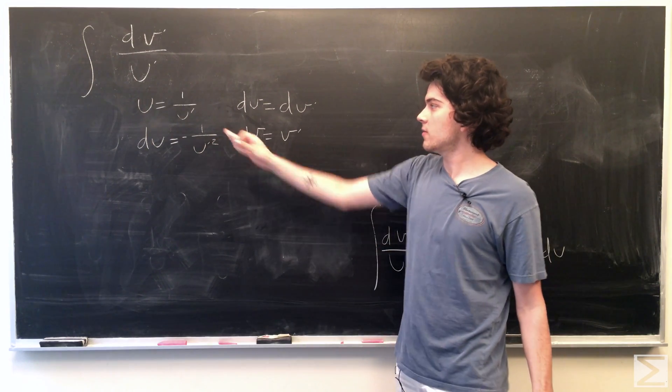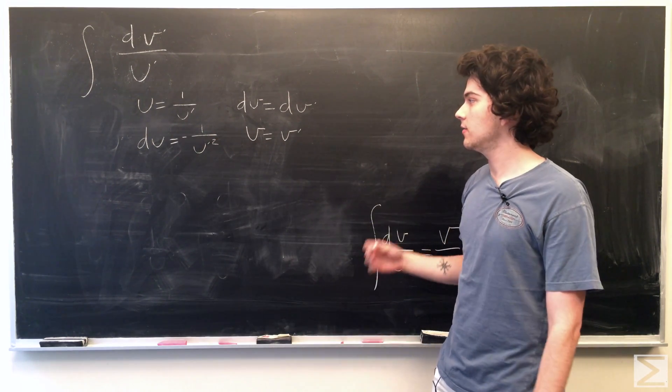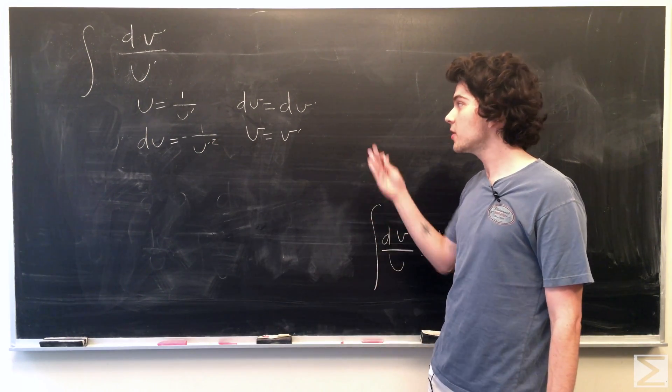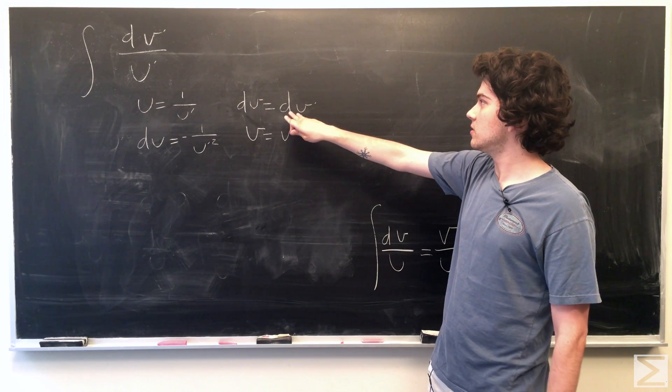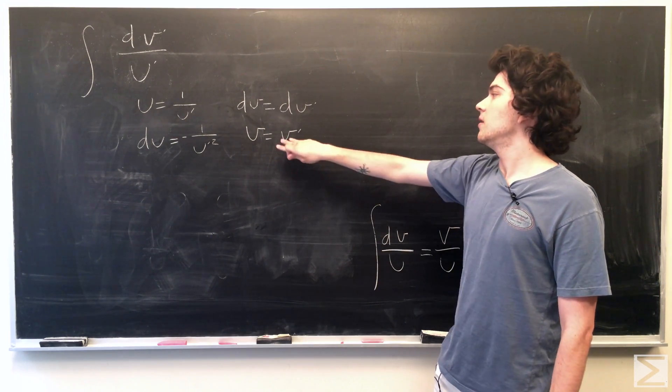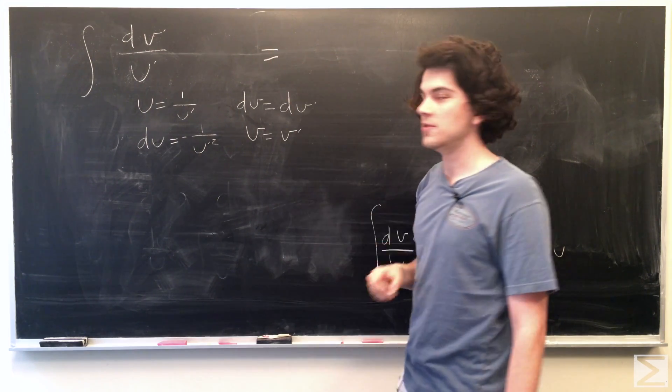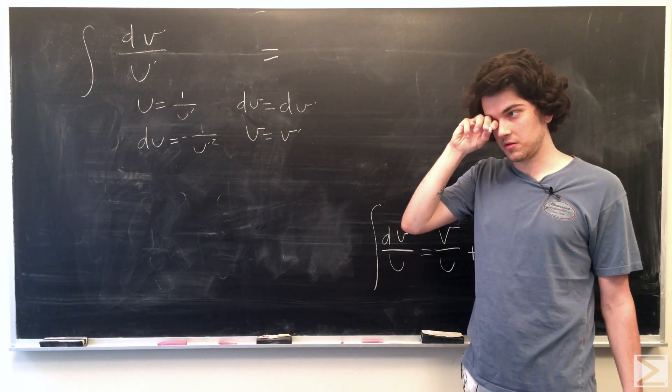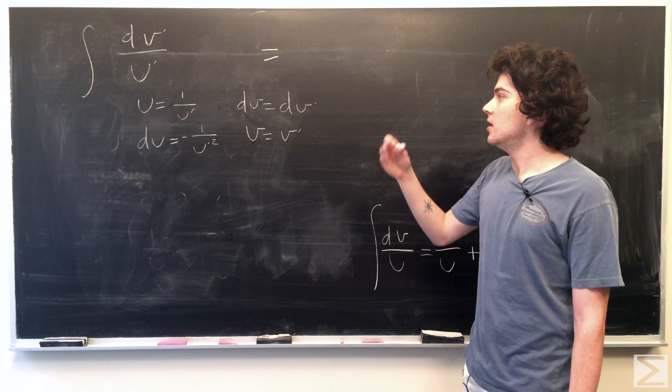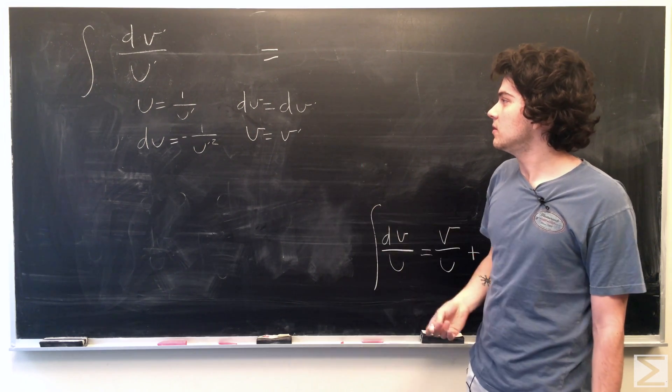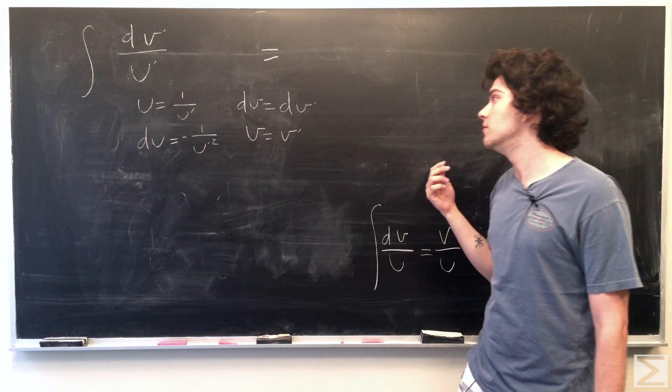So, when we're going to set u equals 1 over u prime, dv equals negative 1 over u prime squared. dv, of course, is just going to be equal to dv prime. v equals v prime. So, plugging this into our regular old integration by parts formula, integral of u dv is equal to u v minus integral of v du.